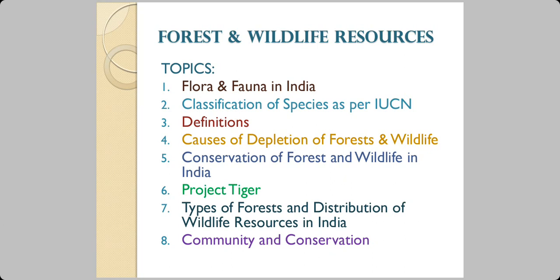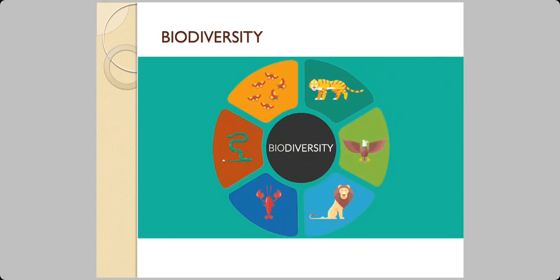The topics we are going to cover here are about the flora and fauna in India, then classification of species as per IUCN — IUCN stands for International Union for Conservation of Nature and Natural Resources — then some definitions, causes of depletion of forest and wildlife in India, conservation of forest and wildlife, success stories such as Project Tiger, types of forests, distribution of wildlife resources in India, and the role of community in conservation.